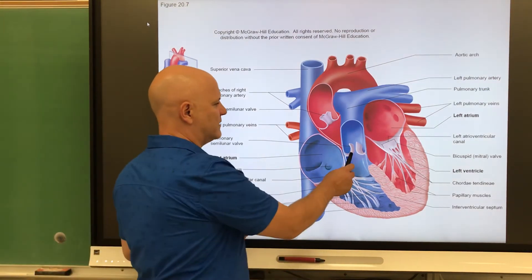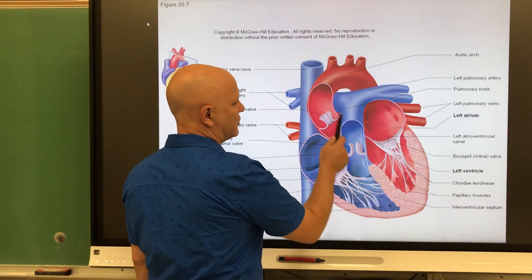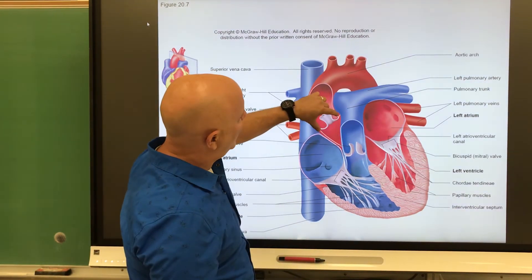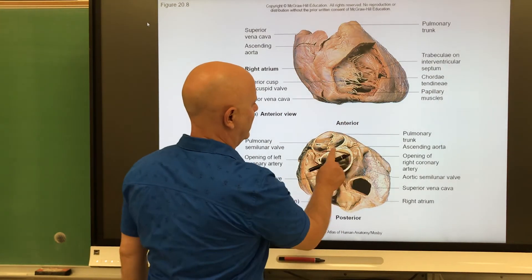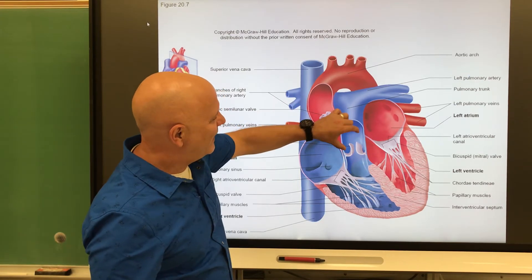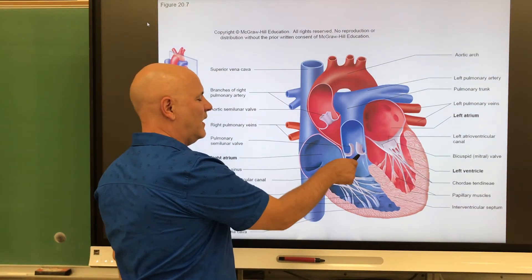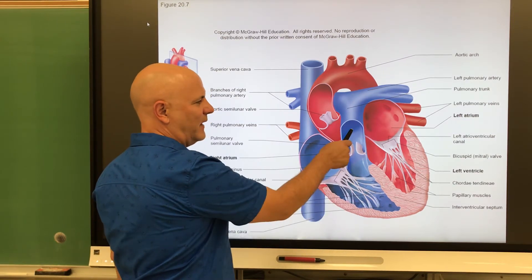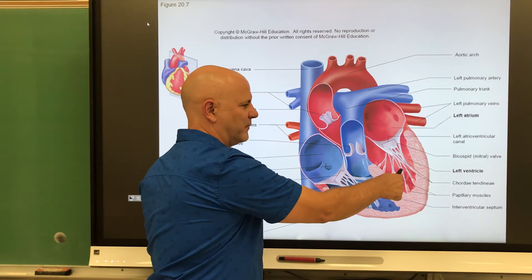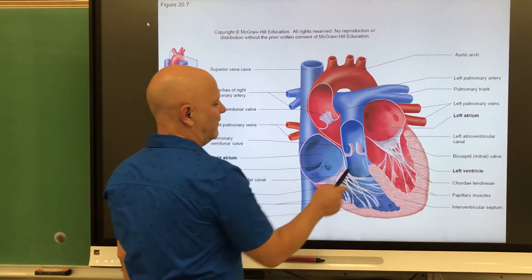Now let's look at the valves. The first two are the semilunar valves. The aortic semilunar valve is between the left ventricle and the aorta. The pulmonary semilunar valve is between the right ventricle and the pulmonary trunk. Blood flows from the right ventricle into the pulmonary trunk, and blood flows from the left ventricle into the aorta.